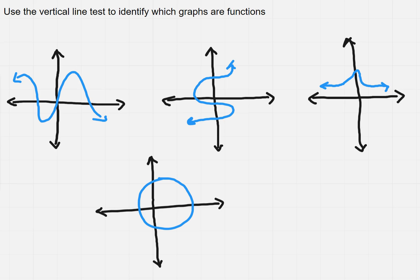So how do you use the vertical line test? It's easy. You draw a vertical line and as long as that vertical line only passes through one point, then what you see is a function.